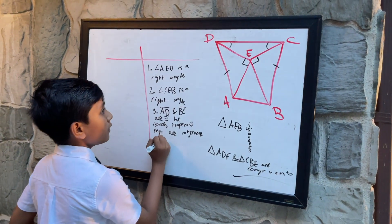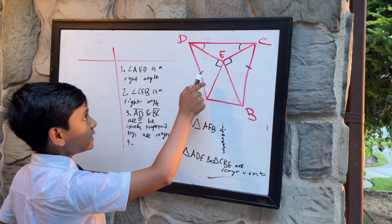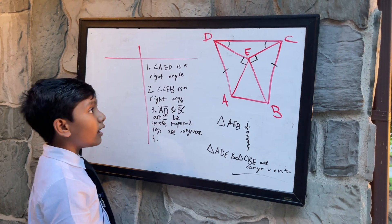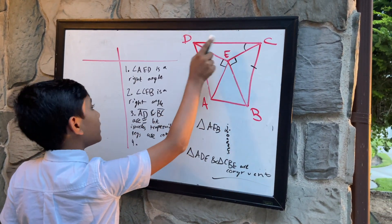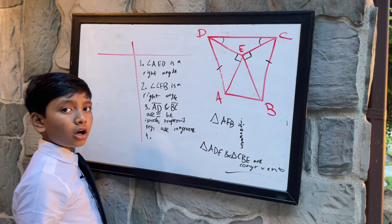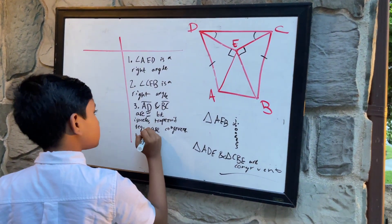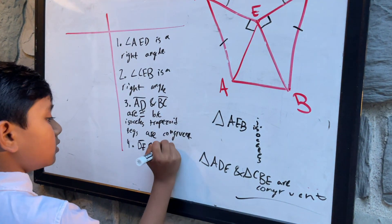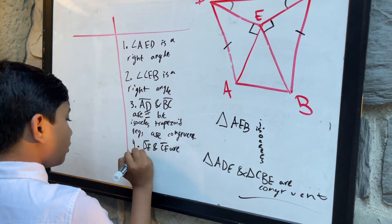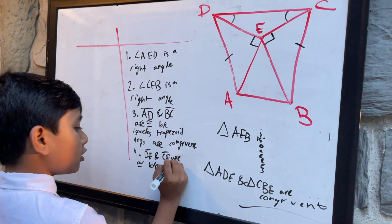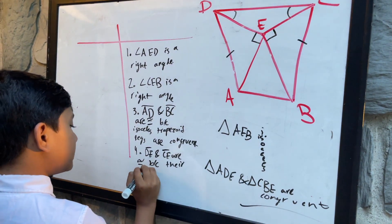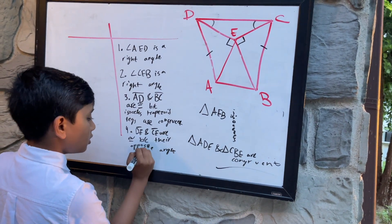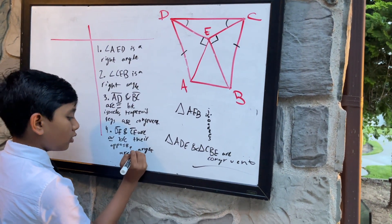We can tell that CE and DE are congruent. Their two opposite angles are equal, so of course they must be equal as well. Therefore DE and CE are congruent because their opposite angles are equal.